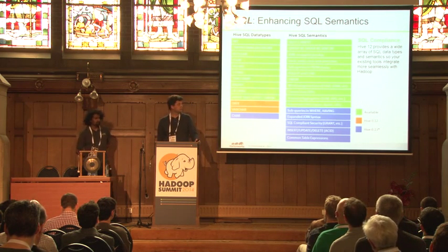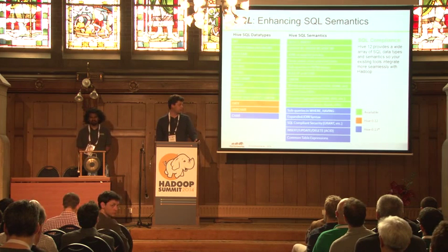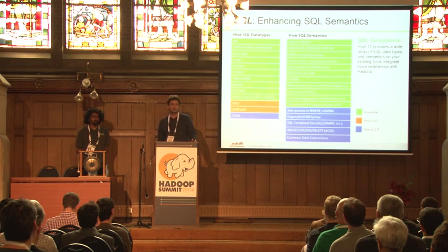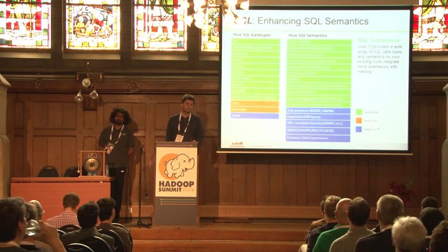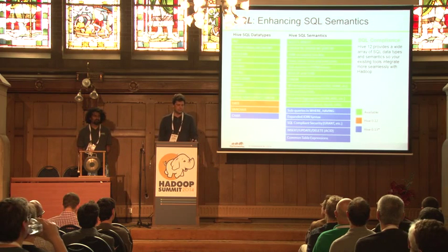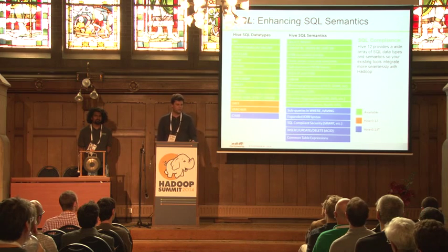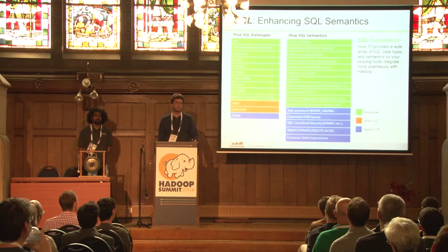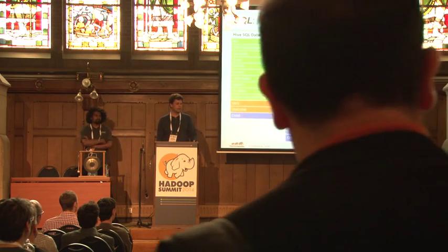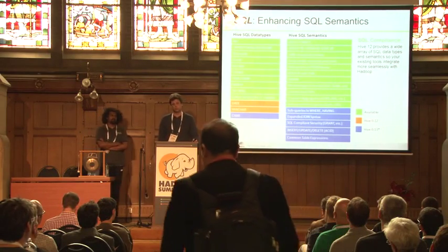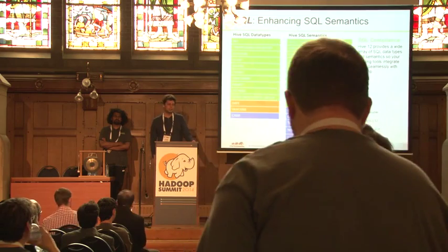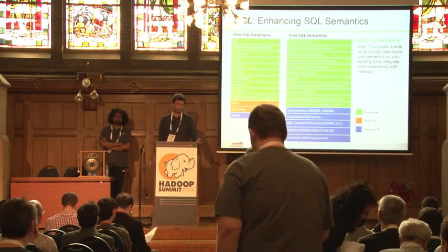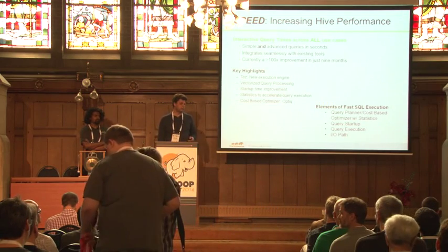Before we dive into performance, a shout out to the guys that continue to expand SQL functionality in Hive — it's important for folks building applications and using SQL tools. Hive 1.3 has a lot of new stuff: common table expressions, subqueries, expanded having clause, join syntax, comma-separated joins, etc. We now have a fairly complete set of data types that other databases support and that tools expect. It's not all about performance — we do spend a lot of time on SQL support and tool integration.